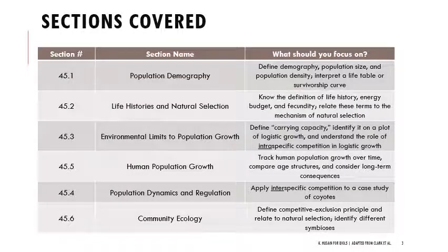We'll cover sections one through six of chapter 45. You'll need to be able to define demography, population size and population density, and interpret a life table or survivorship curve — probably more so survivorship curve than life table. That might be something you need to be able to do on the written questions on the final exam.